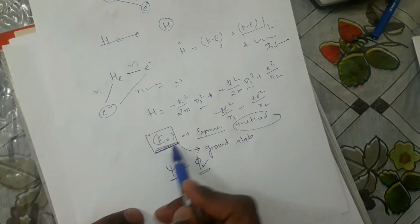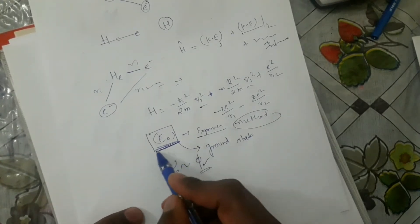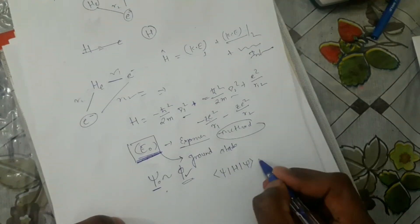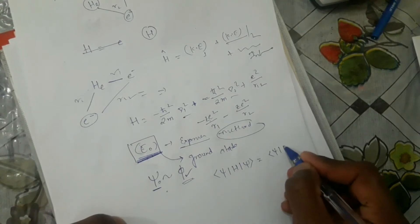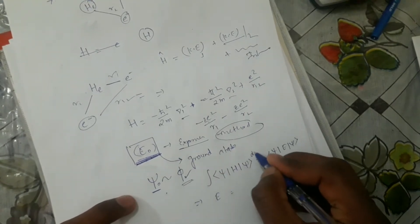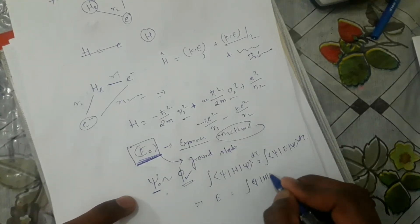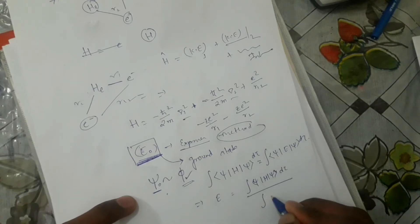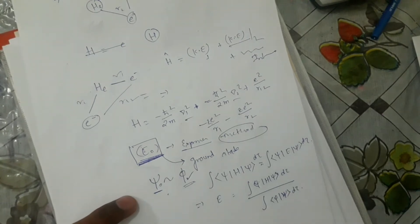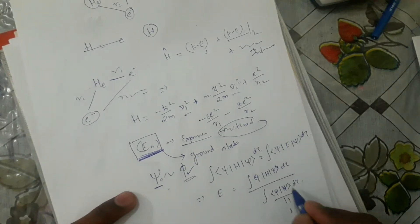The concept is that the ground state energy is the minimum energy for any system. The expectation value of energy is: ⟨E⟩ = ∫ Ψ* H Ψ dτ divided by ∫ Ψ* Ψ dτ. If the wave function is normalized, the denominator equals one. We need to calculate this expectation value.